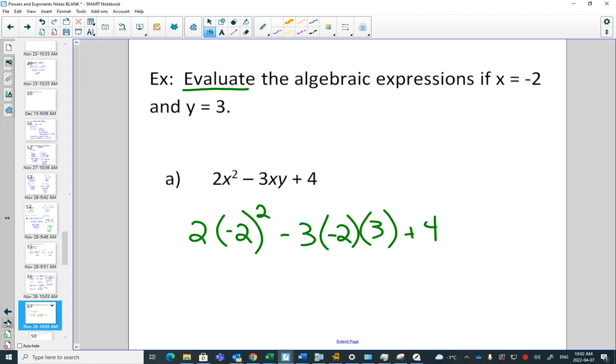Next up, order of operations. We have brackets, but they're just holding numbers. We have an exponent? Yes. That exponent, is it to the 2 and the negative, or just to the 2? To both. So negative 2 times negative 2, that would be 4. Here, I have all multiplying. A negative 3 times a negative 2 times a 3.